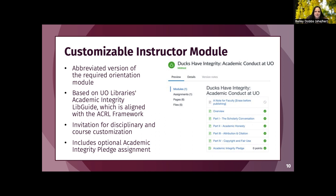We ended up with two different modules. The first was an optional module that instructors could use in their classes, largely based off a LibGuide our colleague Bronwyn Maxson created, which was informed by the ACRL Framework for Information Literacy. At the time it was the only support available for instructors and students on academic integrity on our campus. We converted the LibGuide into a Canvas module so it could easily be imported and integrated into existing course structures, invited faculty to make disciplinary customizations, and condensed it into four main parts: the scholarly conversation, academic honesty, attribution and citation, and copyright and fair use. It also includes an optional academic integrity pledge that instructors can assign with or without points.